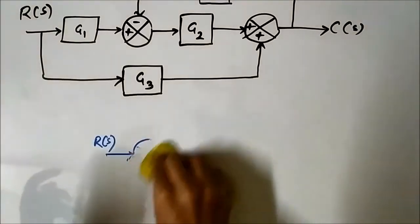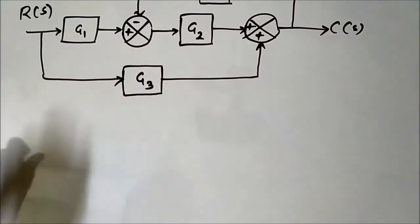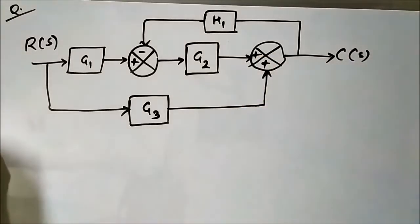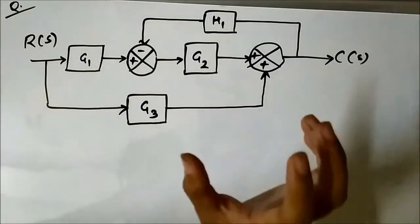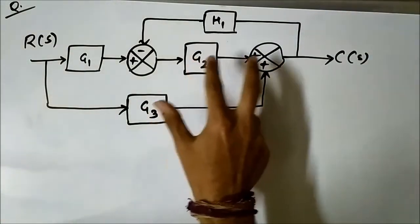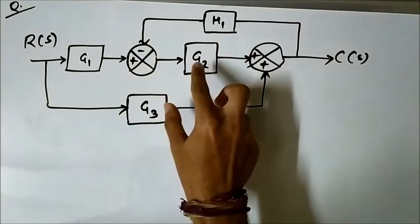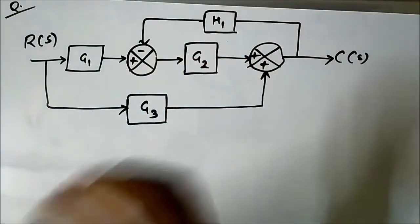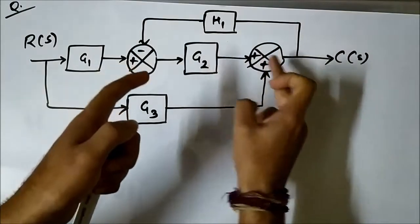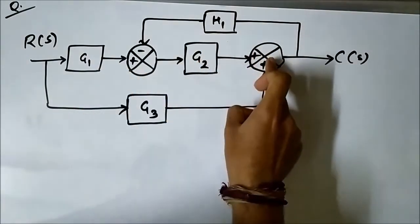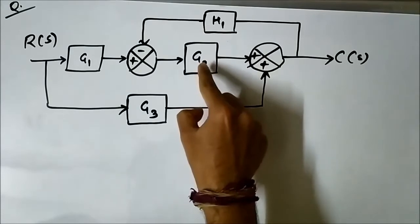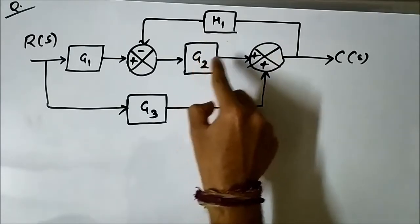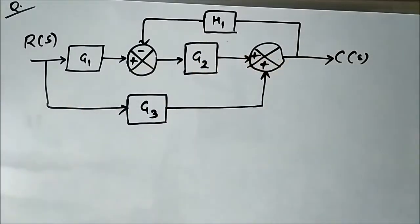The only problem here is that there is a summing point in between this takeoff point and this block. Now let us try to interchange the place of this block and this summing point. We have to bring this summer in the place of block g2 and shift the g2 block to the place of the summer.